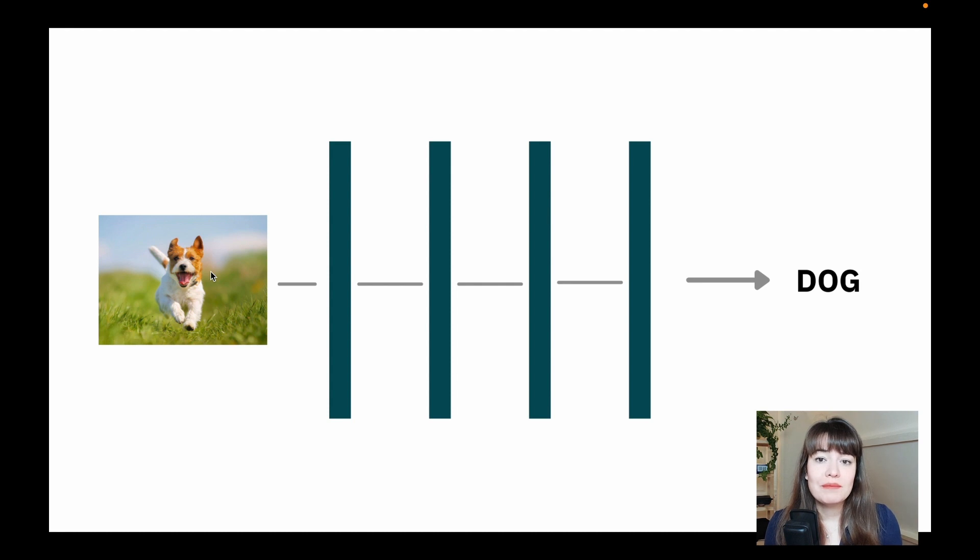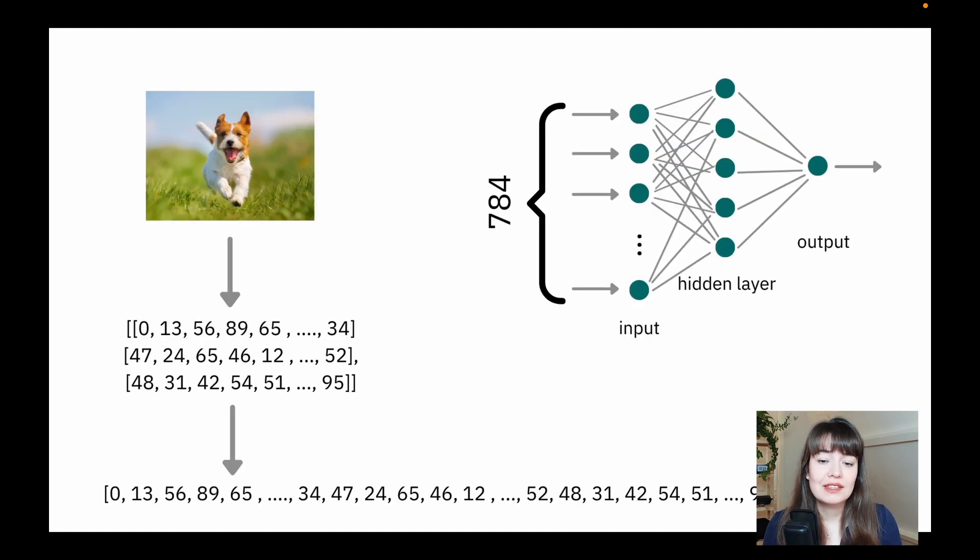So one of the main differences is that in a feed-forward neural network, if we have an image, to be able to put it inside the neural network and get an output, we would have to get all the pixel values of this image and then flatten them to be one long array. So let's say this is a colorful image, but let's say it was a black and white image and it was 28 by 28, then we would have 784 pixel values.